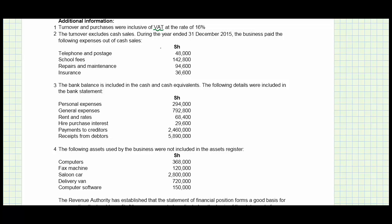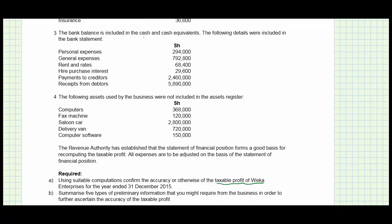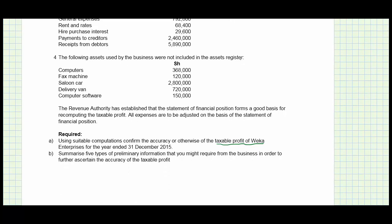The business paid the following expenses out of cash sales, so to get total sales we have to add credit sales to cash sales. Note number three states that the bank balance is included in cash and cash equivalents, and the following details were included in the bank statements. Note number four says the following assets used by the business are not included in the assets register — these have to be factored in. The revenue authority has established that the statement of financial position forms a good basis for recomputing the taxable profit, and all expenses are to be adjusted on that basis.